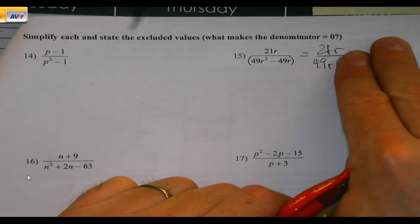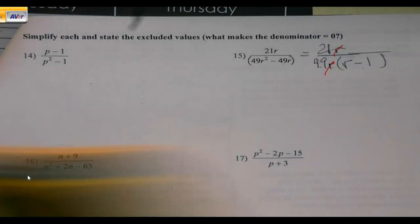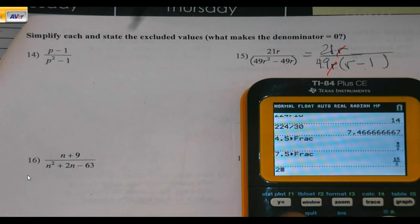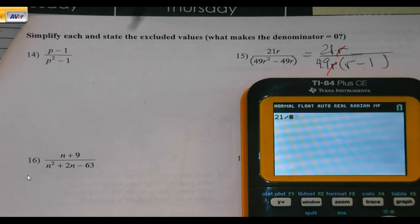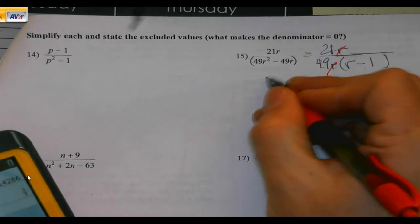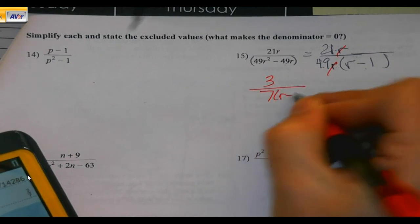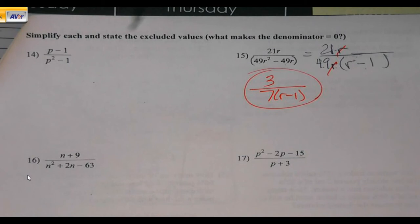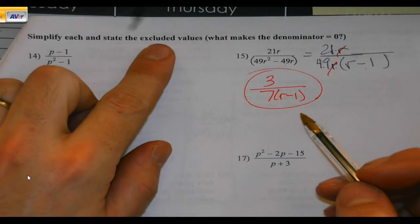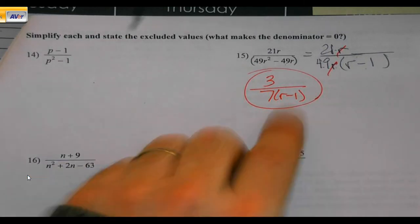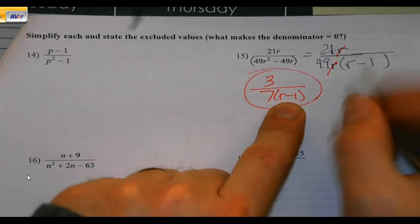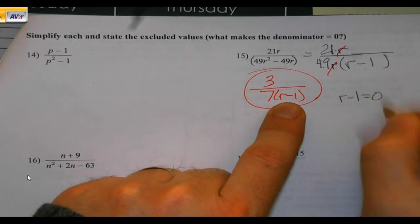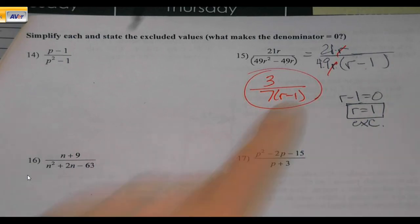So, now that I've factored, what can I do? Stuff that's not in parentheses can reduce. So, the R's cancel. That reduces, 3 over 7. 3 over 7r minus 1. The stuff that is not bounded by plus or minus is fair game. Now, state the excluded values. What would make the denominator equal zero? You take anything there with a variable and set it equal to zero. R cannot equal 1.